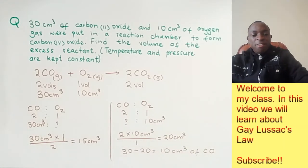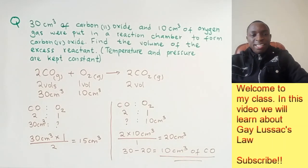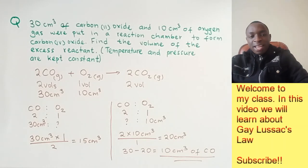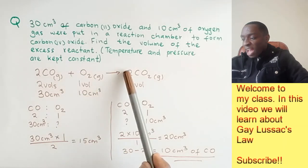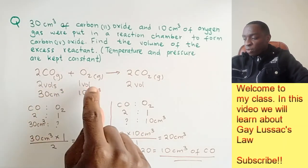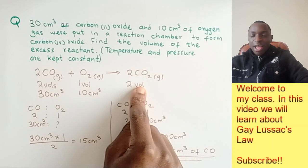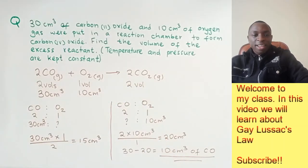That is our final answer. You can see it is very easy. All you need to remember is that the same numbers used for balancing the equation — these coefficients — are the same ones that give us the volume ratios for these reactions. I'm using VOL to represent volume.